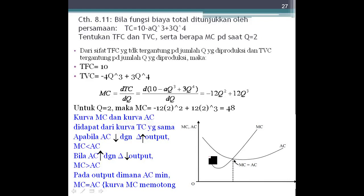Di contoh 8.11 ini dijelaskan ya. Contoh 8.12. Bila kurva biaya rata-rata ditunjukkan oleh persamaan AC. Tentukan jumlah output yang diproduksi pada saat AC minimum. AC minimum terjadi pada saat turunan pertamanya. Turunan keduanya lebih besar dari 0. Maka turunan pertamanya.